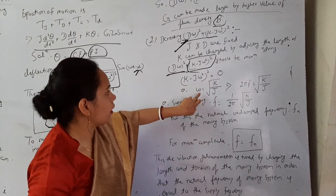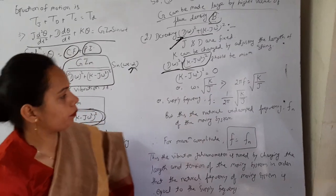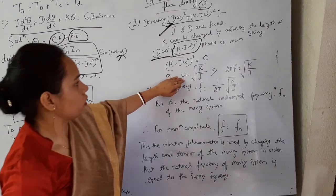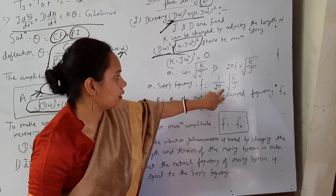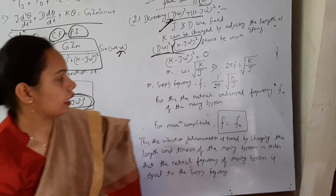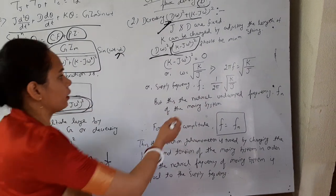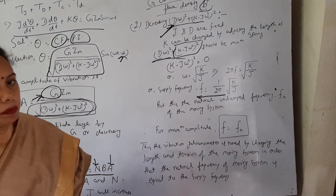So from this here a condition has arrived that ω = √(K/J). And ω is already known that 2πf, and f is your frequency which has the value 1/(2π)√(K/J). This is the condition where the denominator should become minimum.